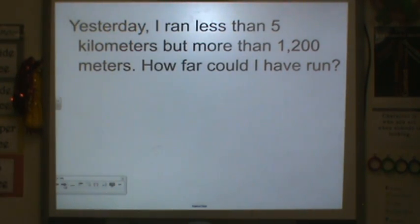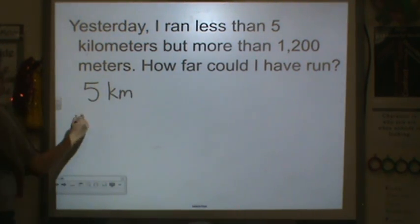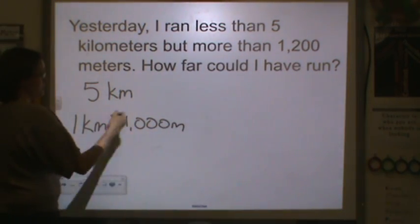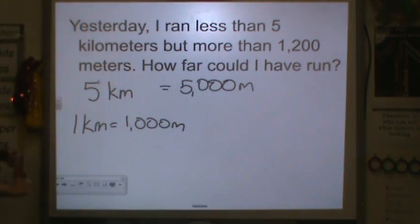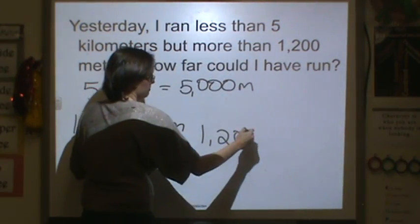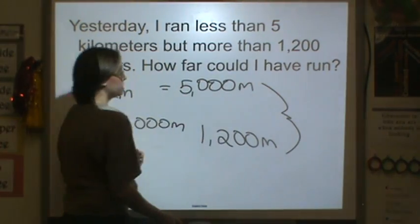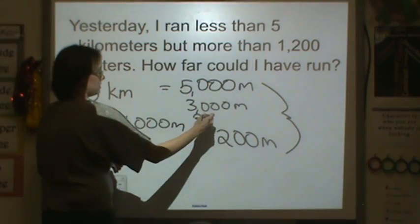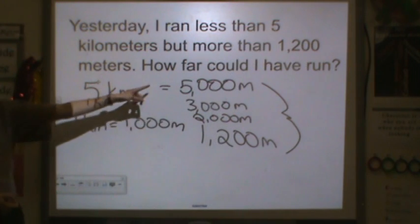Yesterday I ran less than five kilometers. Remember, one kilometer is equal to 1,000 meters. So five kilometers is equal to 5,000 meters. But I ran more than 1,200 meters. How far could I have run? So I need a number that's between the two of these. It could be 3,000 meters or 2,000 meters, because 3,000 meters and 2,000 meters are in between these two numbers.